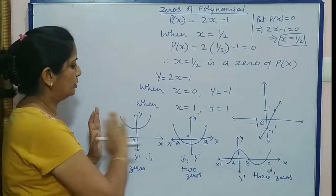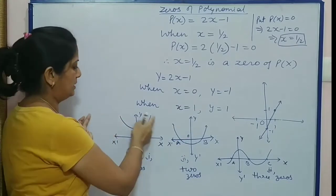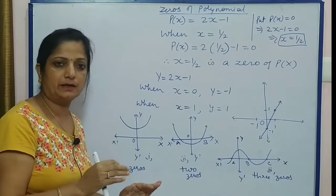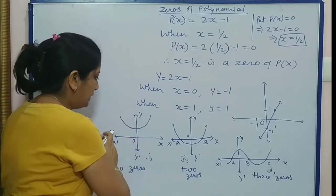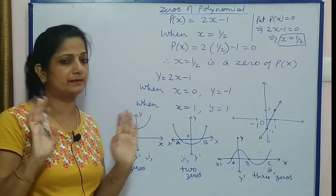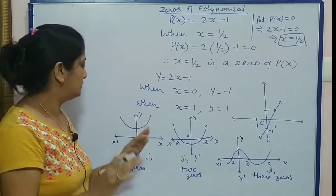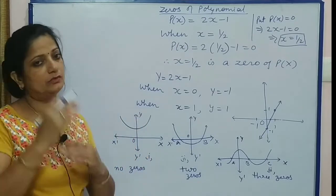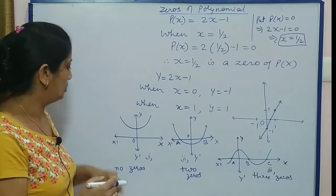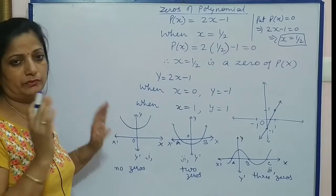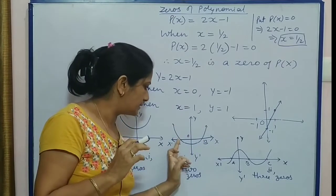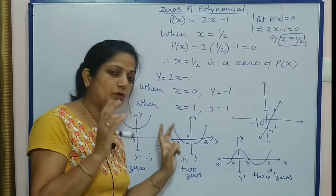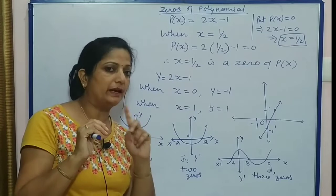Another example hum ne liya. Suppose yeh graph hai aapke paas. Is graph mein jo given curve hai, woh x-axis ko ek bhi point pe intersect nahi kar raha hai. There is no point of intersection with x-axis, so there is no zeros of this polynomial.